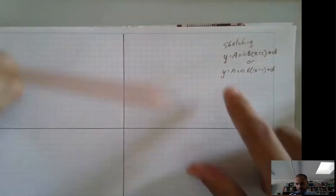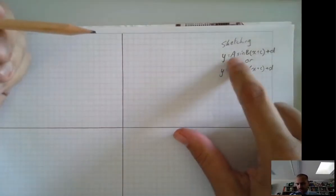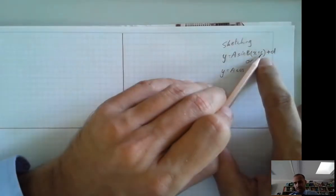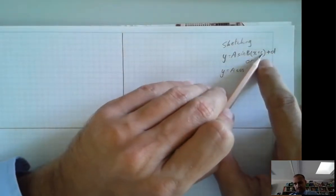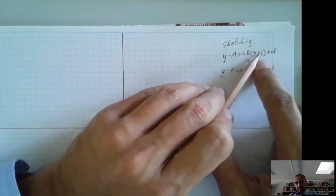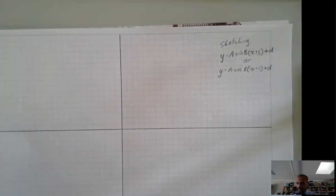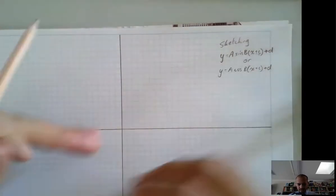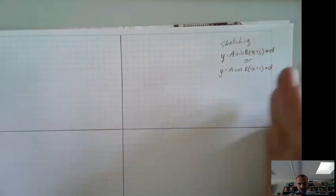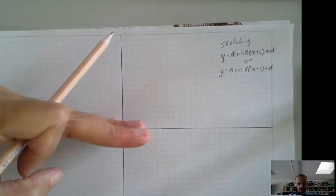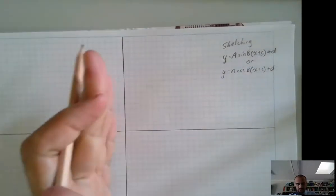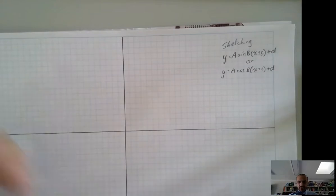So now you know how to do y equals a sine bx plus d. This video is about adding in an extra plus c — adding c to the x value, not to the whole function. What a did was stretch it vertically, what b did was stretch it horizontally, what d did was move it up or down, and what c is going to do is move it left and right.